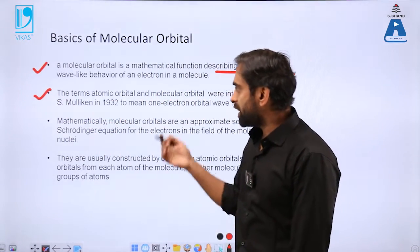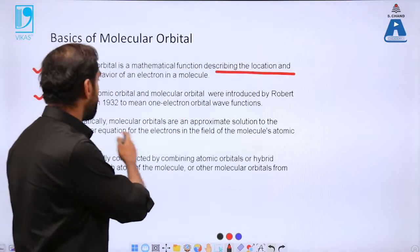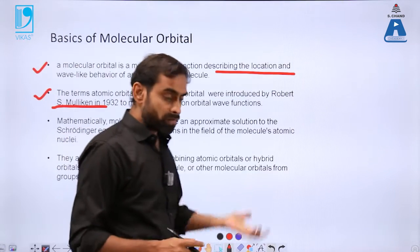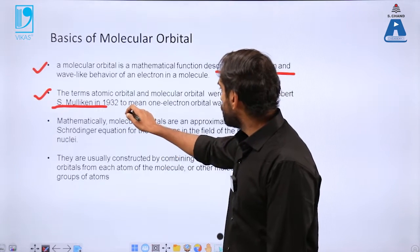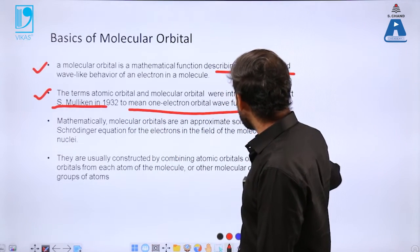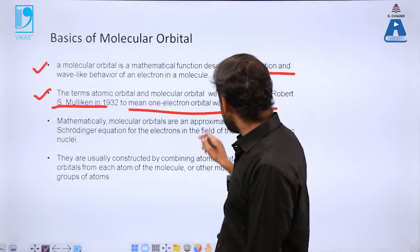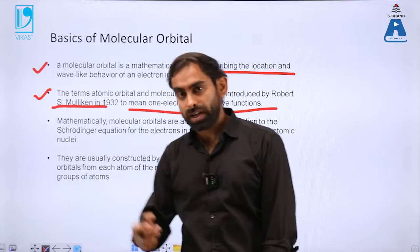This theory came much later than the atomic orbital concept. The molecular orbital concept was introduced by Robert Mulliken, who was involved in the discovery of elementary particles. It was basically meant for one electron orbital systems.